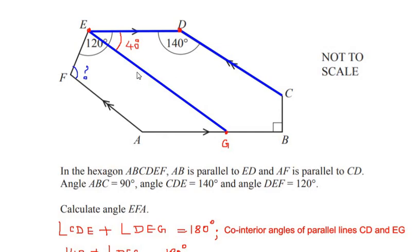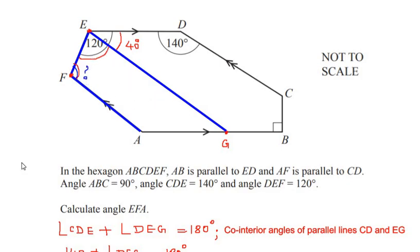Now let us consider the pair of parallel lines EG and AF. For these parallel lines, the line EF is acting as a transversal which cuts the two lines at points E and F. So again, angle E and angle F act as co-interior angles of the two parallel lines, and we can write: angle FEG plus angle EFA is equal to 180 degrees.